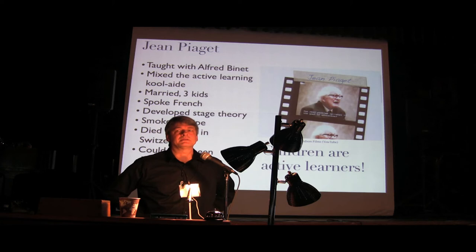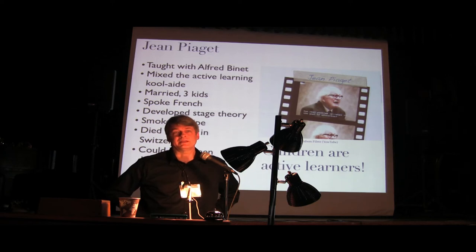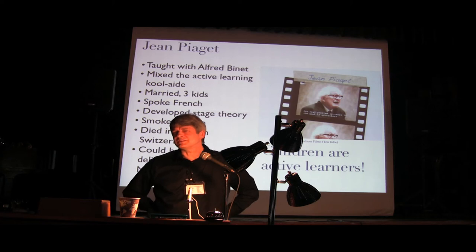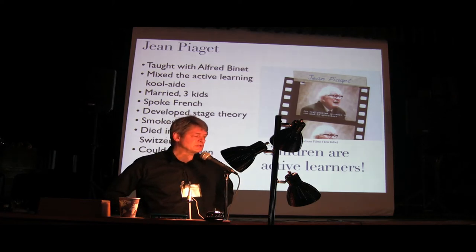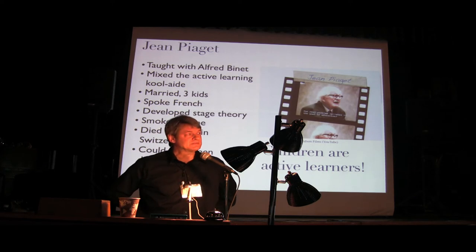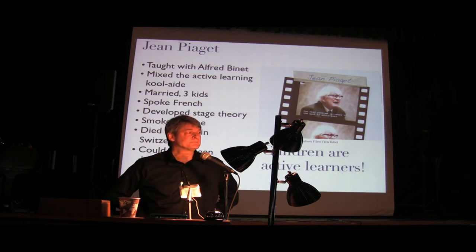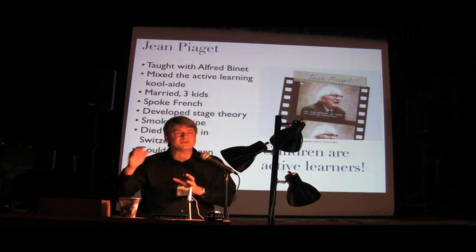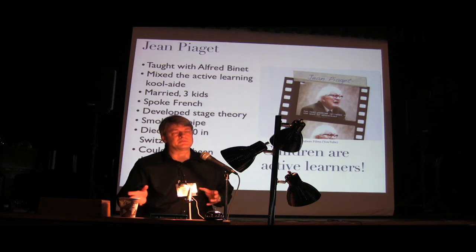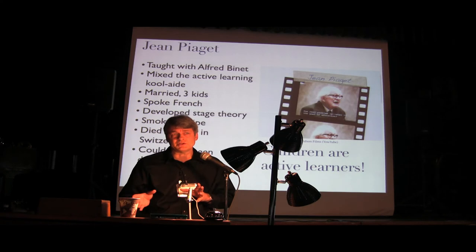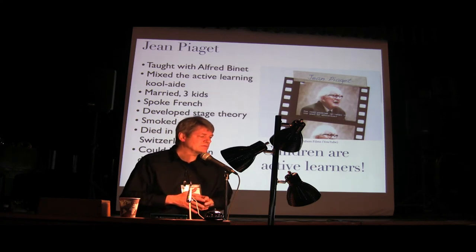Piaget was an organism thinker. He studied his own daughters, which is really kind of frightening. He was married, three kids, spoke French, smoked a pipe. He died in 1980 after a long life. He was born the same year as Lev Vygotsky — 1894. And Marie Montessori could have delivered them because that was the first year she was practicing medicine in Italy. These people are just in a long lineage of theoretical framework — Froebel before Piaget — and they all sort of helped each other. None of this happened in isolation.